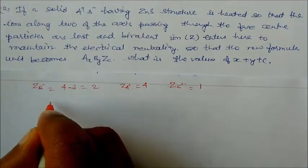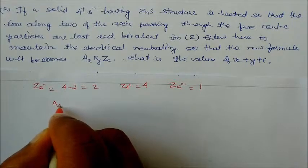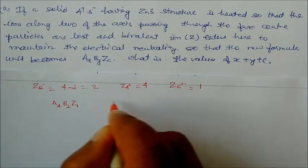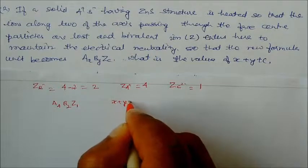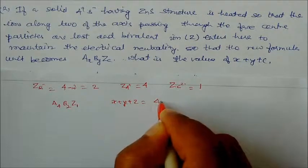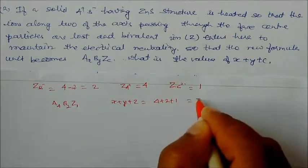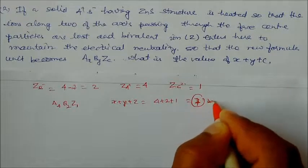A will be 4, B will be 2, C will be 1. Therefore, x+y+z = 4+2+1 = 7. This is our answer.